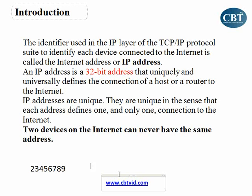An IP address is a 32-bit address. Why do we use bits here? Because, as you know, a computer uses bits — a computer works based on binary. We have just zero and one, and it works on bits. So here we have an address which is a 32-bit address.